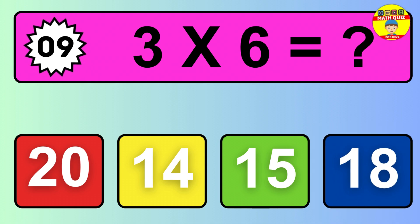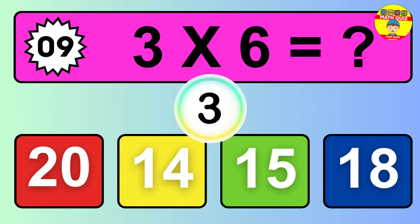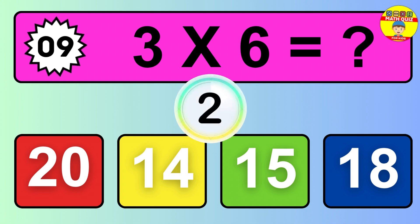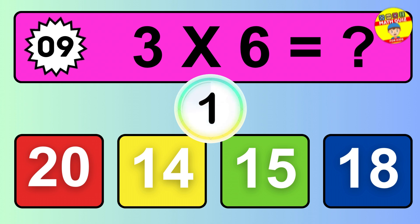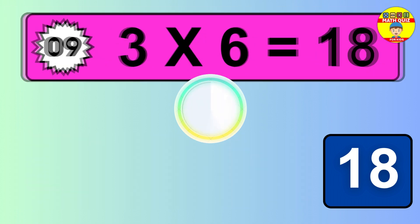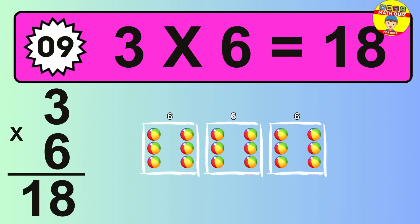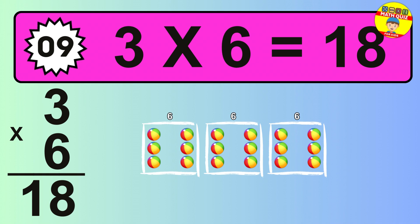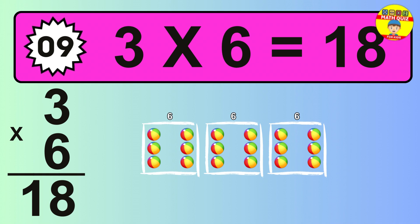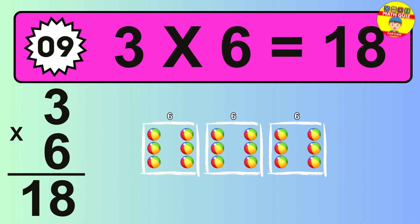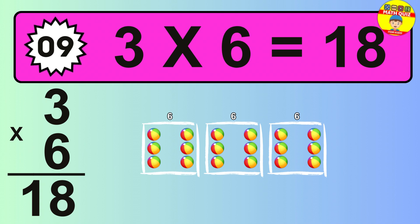Question 9. 3 times 6 equals what? The answer is 3 times 6 is 18. To calculate, we have 3 groups with 6 balls each one. So how many balls do we have? 18 balls.